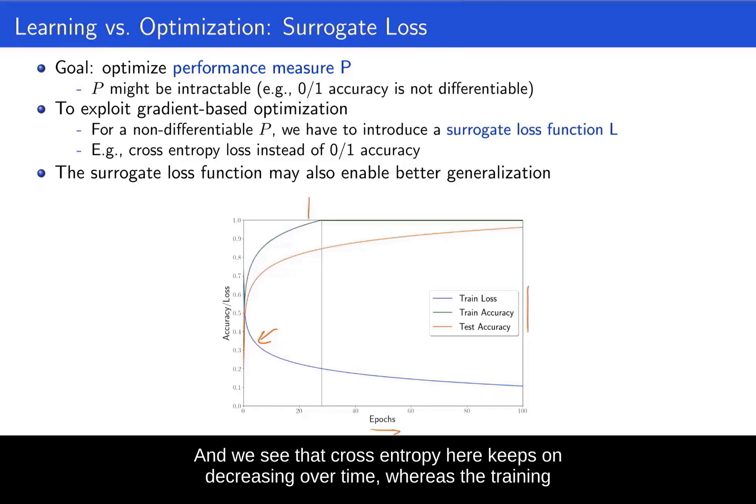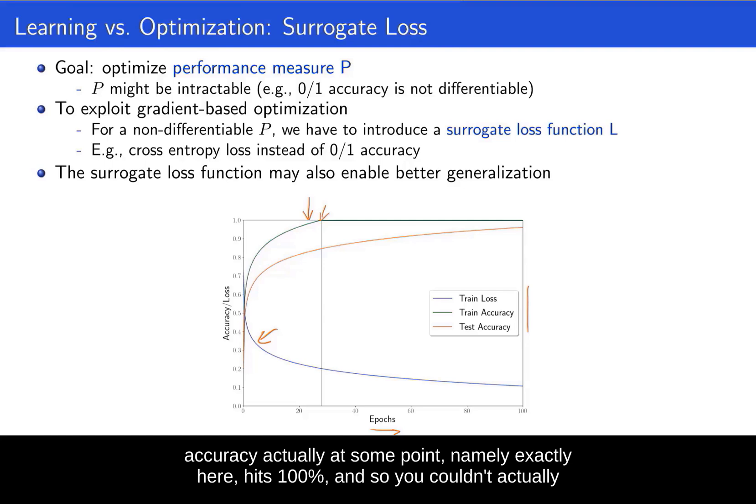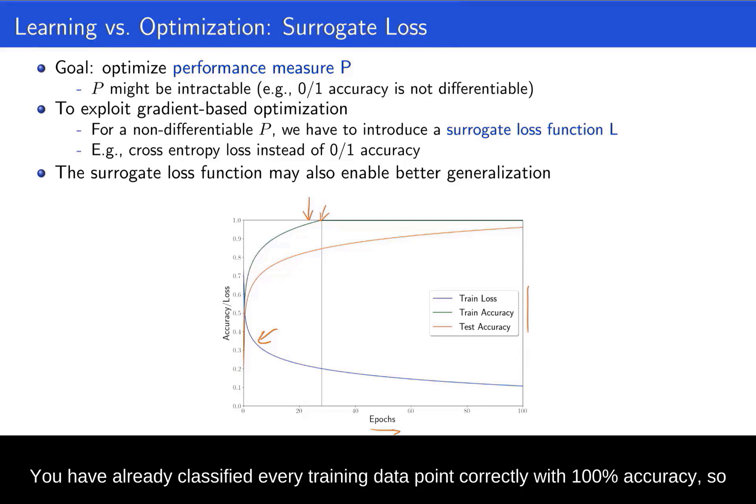And we see that cross-entropy here keeps on decreasing over time, whereas the training accuracy actually at some point, namely exactly here, hits 100%.